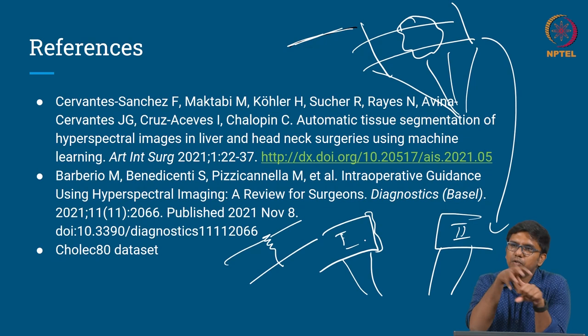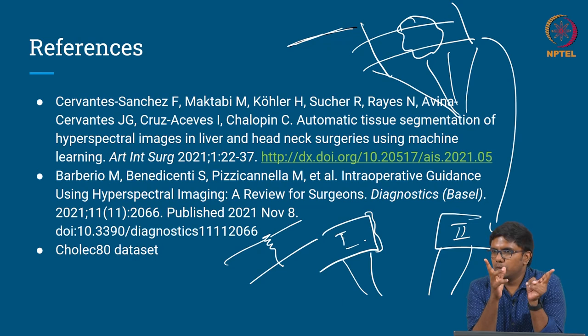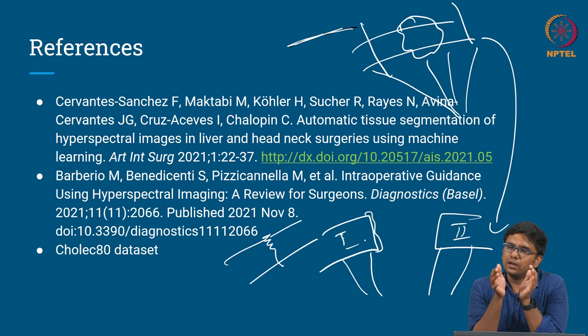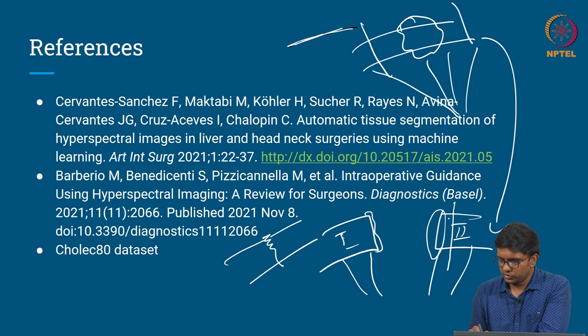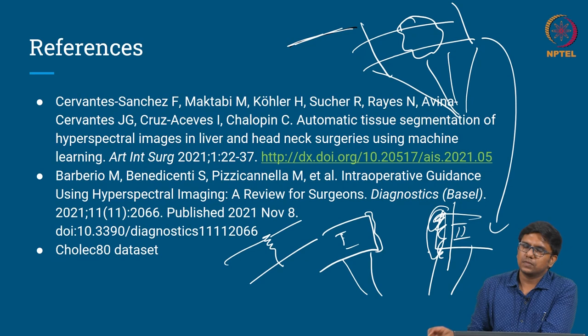There is an extra HSI attachment to the laparoscopic camera head. Once the diseased intestine is removed, they activate this mode in the camera, which tells whether the ends are well perfused or not. If an end is not perfused, they cut back further to a point where perfusion is adequate. If the end does not have good blood supply, they can revise and trim it, because the anastomosis must have a good blood supply to survive.